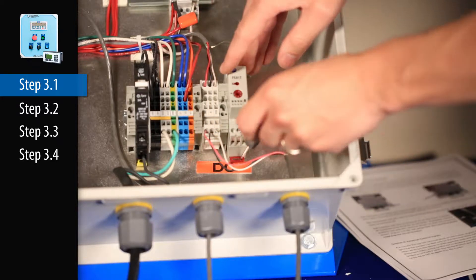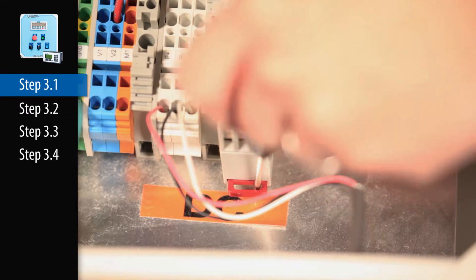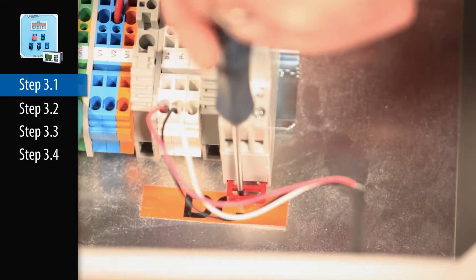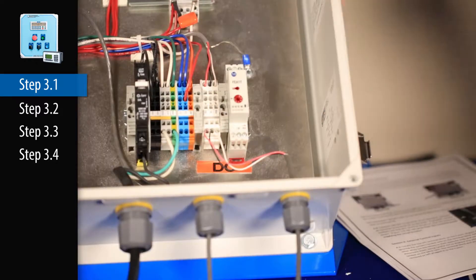Using a screwdriver, pull the red tab on the bottom of the timer and push the timer onto the DIN rail. When the timer is flat, release the red tab to secure it onto the DIN rail. You should not be able to pull the timer off the DIN rail when it is installed correctly.